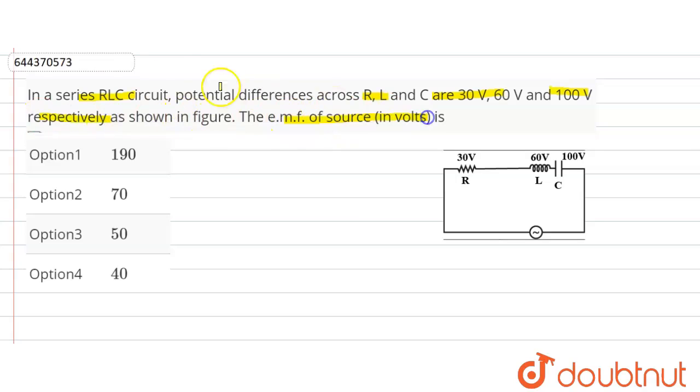Okay, so V source is equal to the square root of VR squared plus VC minus VL squared. Here VC minus VL squared.